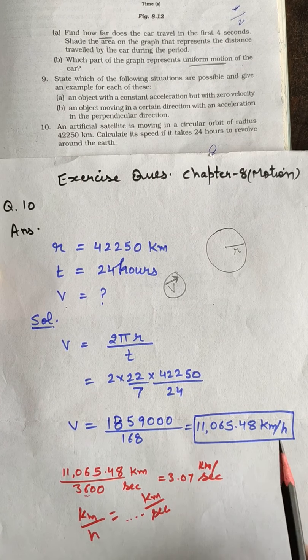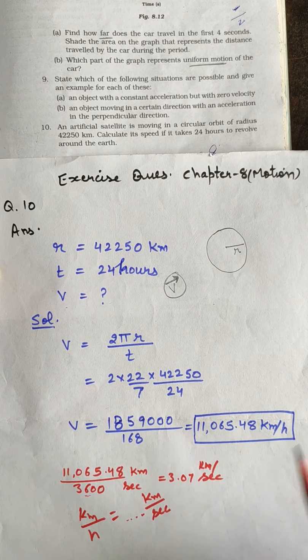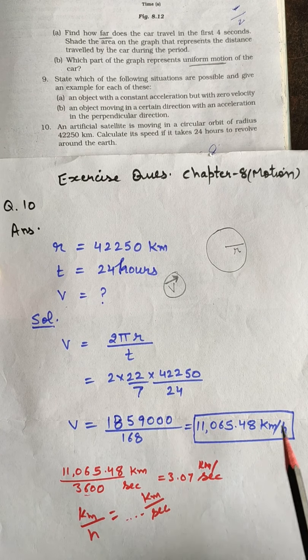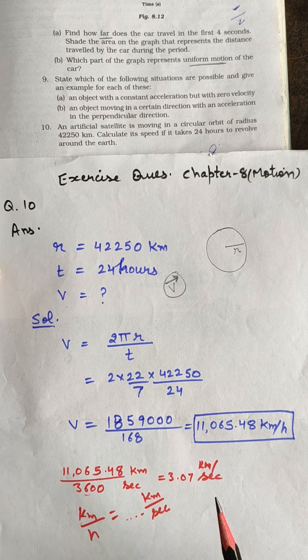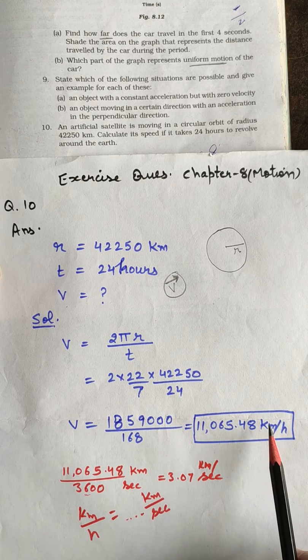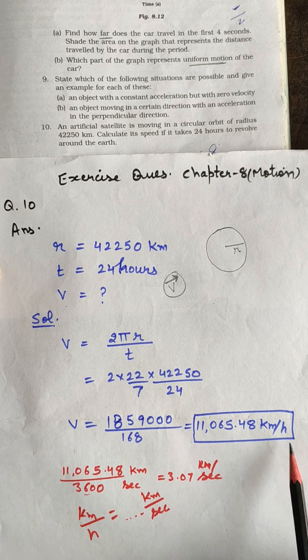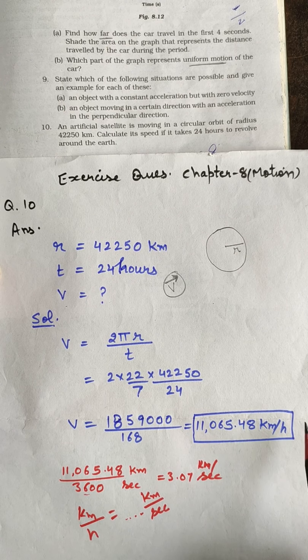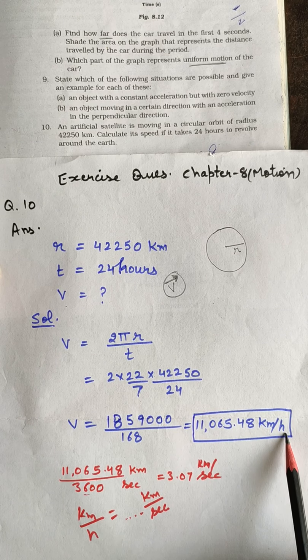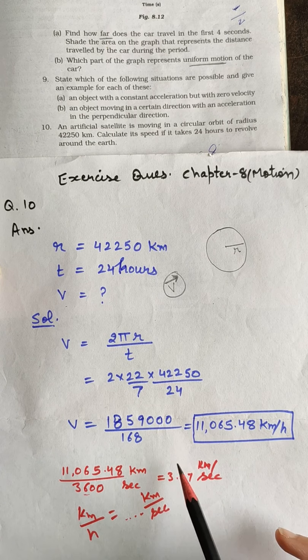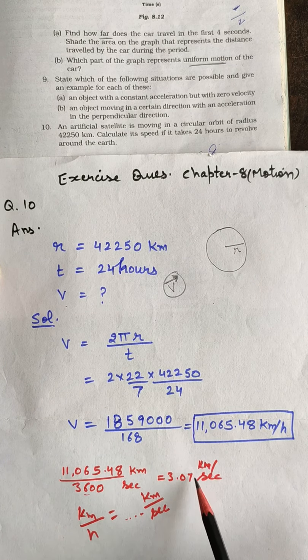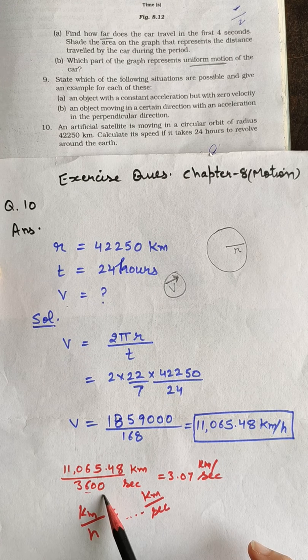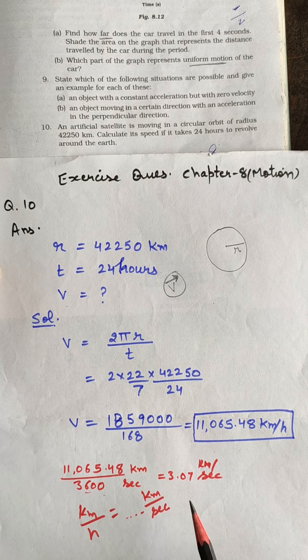Our answer is correct but when you compare it with the answer given in your NCERT, you will feel that the answer is not matching. Just see carefully, answer given in NCERT at the back is in km per second unit and our answer is in km per hour. If we want to convert km per hour into per second, we will divide it by 3600 seconds and finally our answer will match.